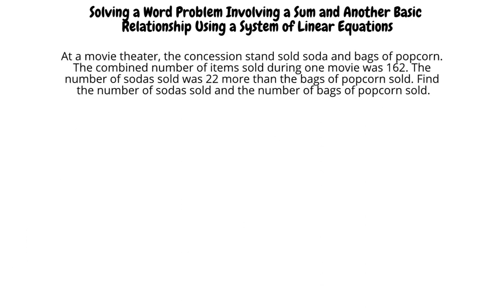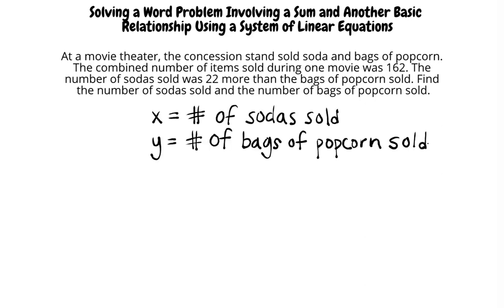At a movie theater, the concession stand sold soda and bags of popcorn. The combined number of items sold during one movie was 162. The number of sodas sold was 22 more than the bags of popcorn sold. Find the number of sodas sold and the number of bags of popcorn sold. Let x be the number of sodas sold and y be the number of bags of popcorn sold.